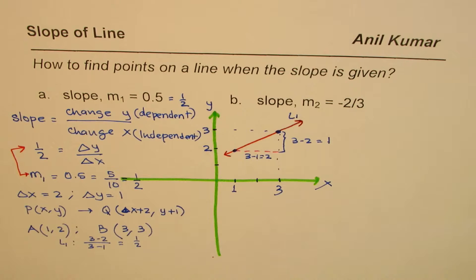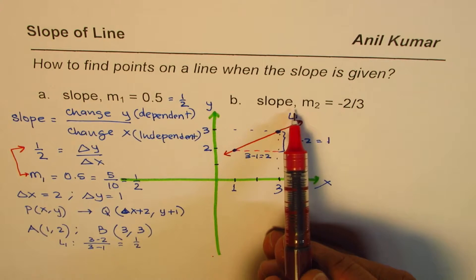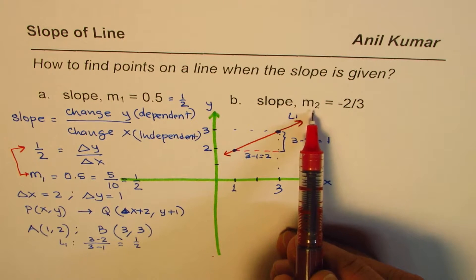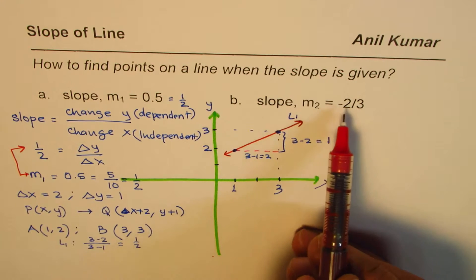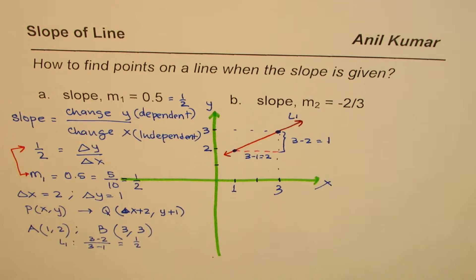Now here is the practice question: find a set of points on a line which has a slope of minus 2 over 3. You can pause the video, answer the question, and then look at my suggestion.